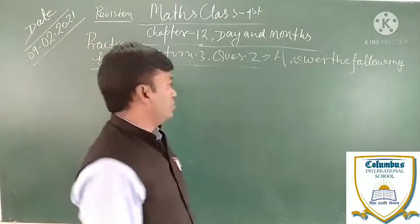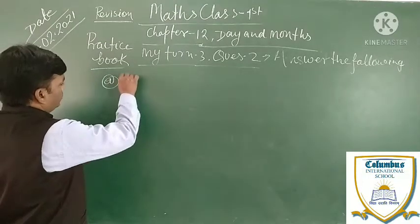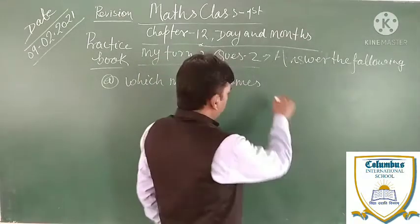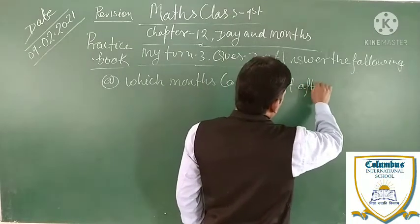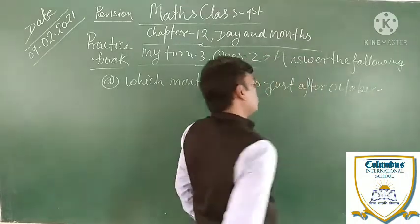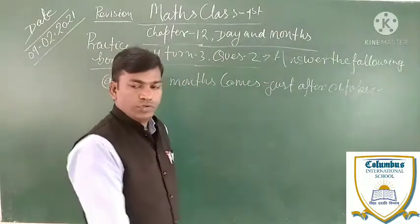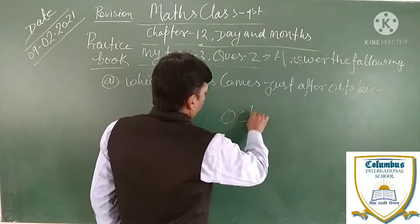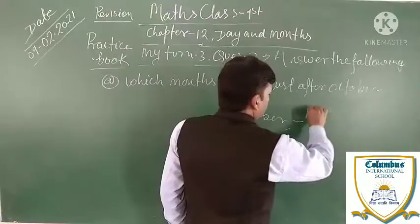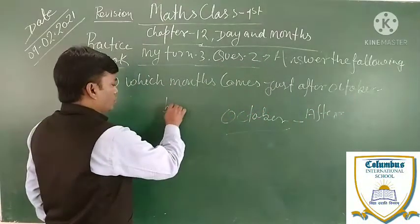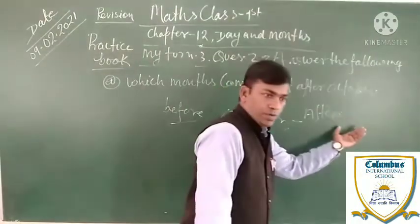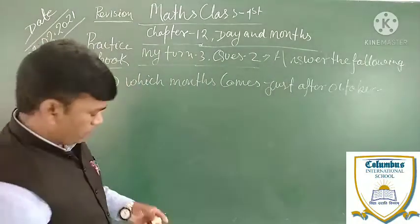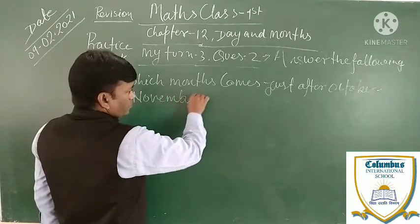Which month comes just after October? Tell me, anyone. Very good! You know that October — this is October, and after October we go forward. So here the answer will be November.